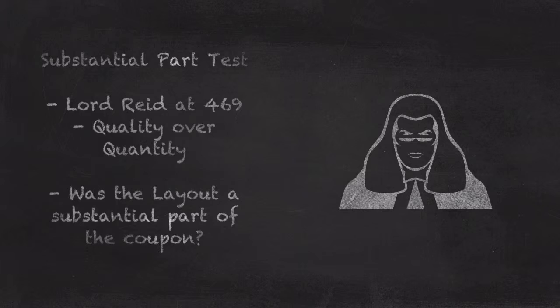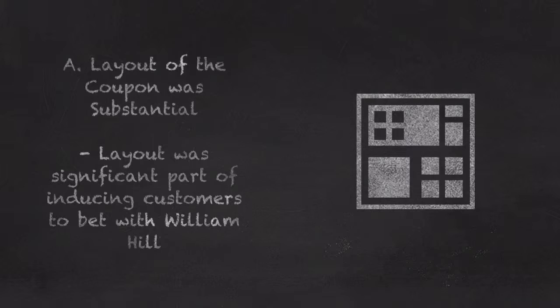While a lot of work went into devising the individual odds on the coupon, which Ladbroke had not copied, it came down to whether the quality of the layout of the coupon was substantial in comparison to that work. Essentially, William Hill's success in the fixed odds marketplace can be attributed to the layout of their coupon. The layout had appealed to the customers enough to ensure they would be induced to place wagers on the William Hill coupon rather than their rivals, which was a determining factor in whether it was substantial.